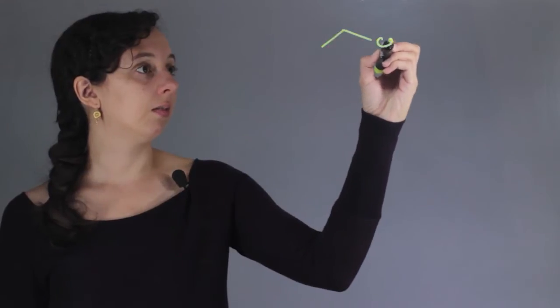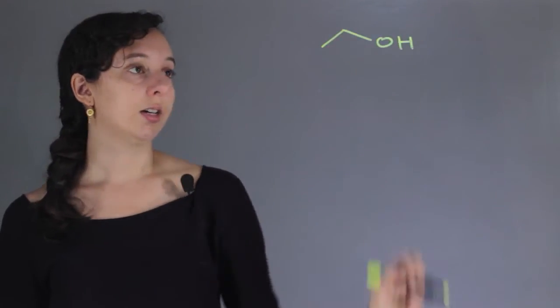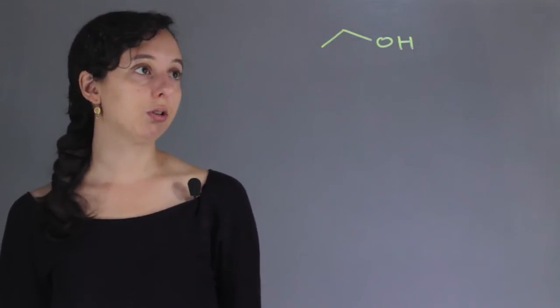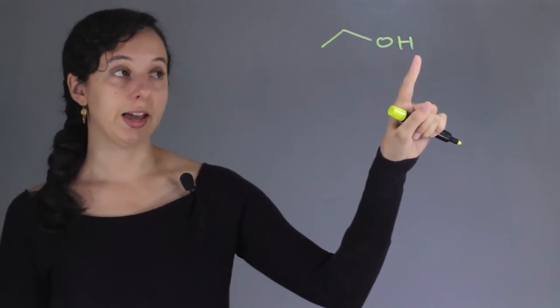So first of all, the structure of ethanol, all the alcohol that you're drinking, is like this. And so you have two carbons, and you have an alcohol group, an OH group on the end.